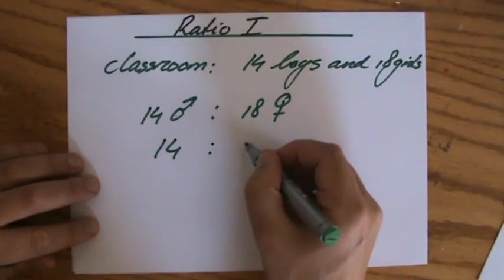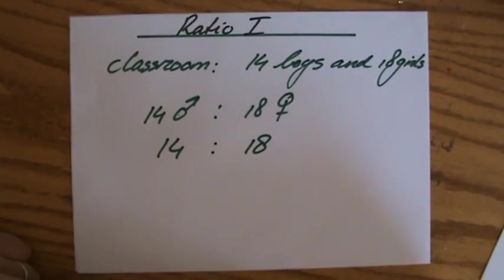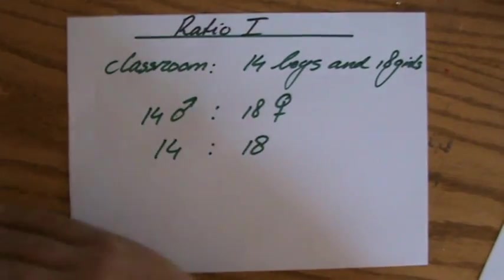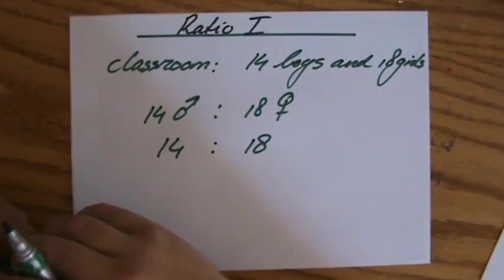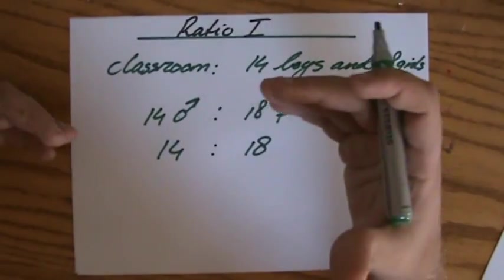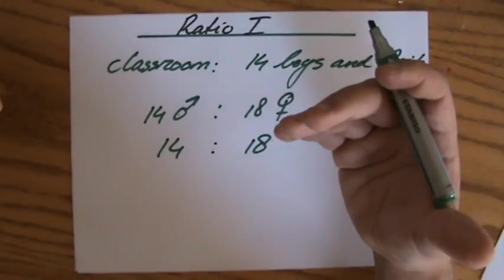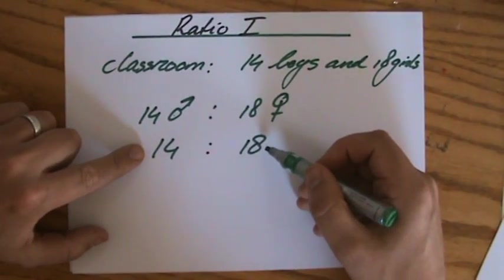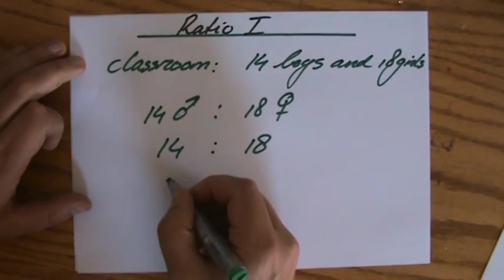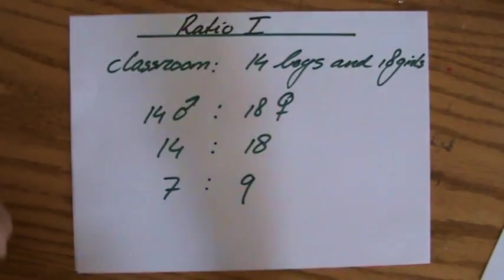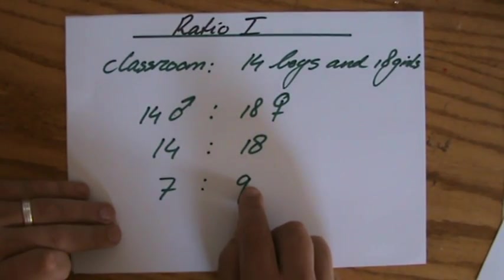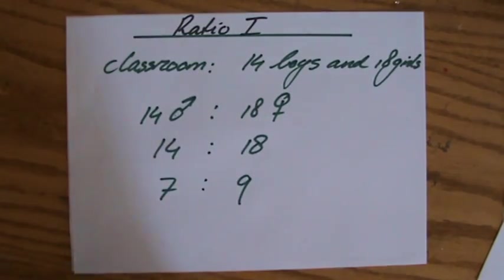We say 14 as a ratio to 18, and that is a ratio of boys to girls. However, ratios, like fractions, you always have to give in their most simple form. So I've got to simplify, take out the common factor. 14 to 18 simplifies to 7 to 9, and that means for every 7 boys there are 9 girls.